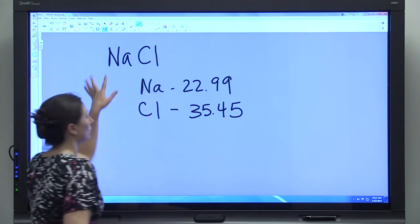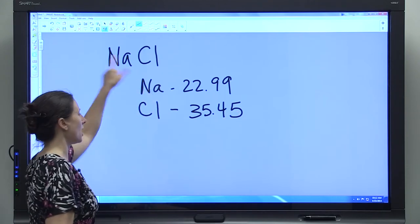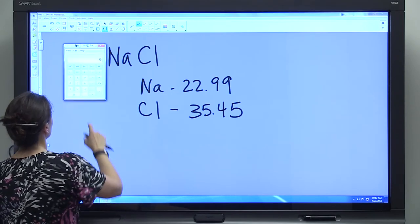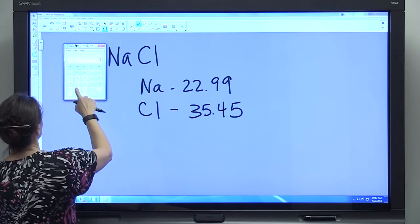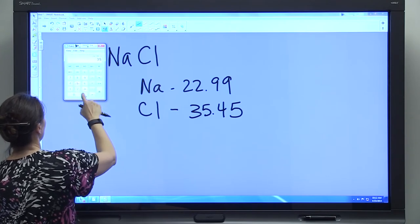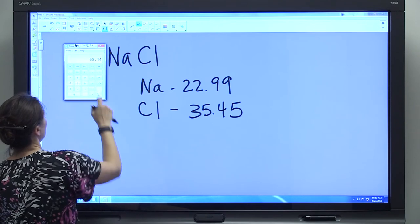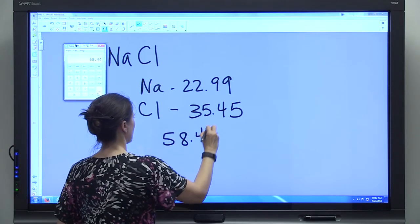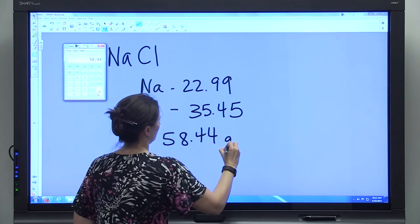So the atomic mass of this molecule, sodium chloride, is 22.99 plus 35.45. We have 58.44 grams per mole.